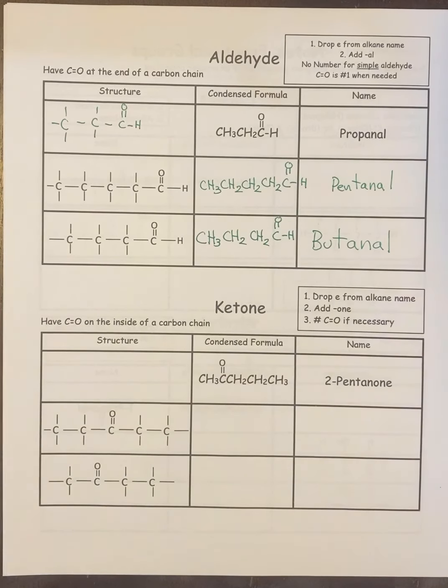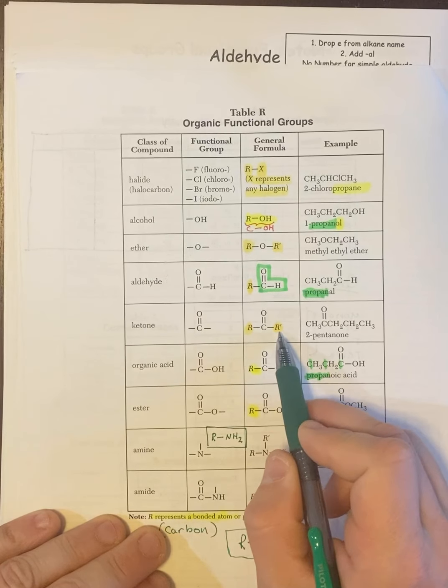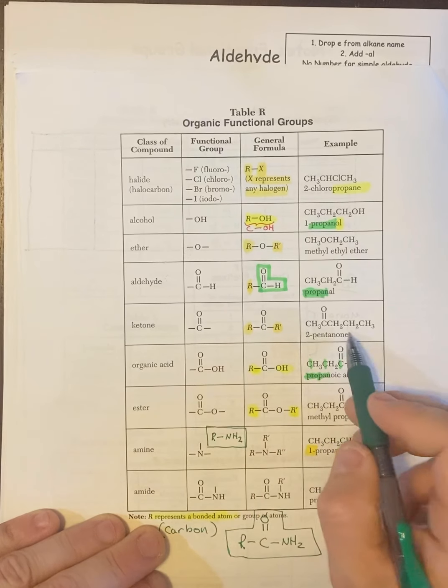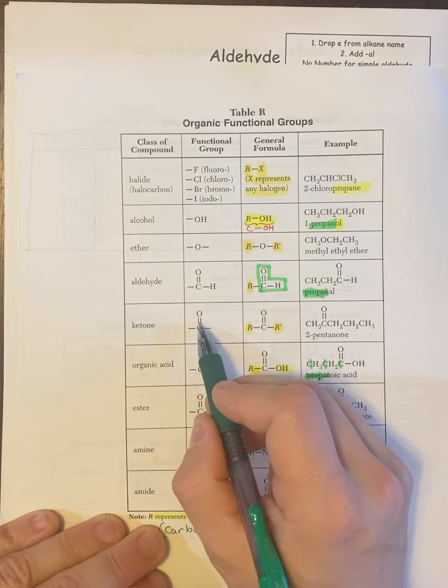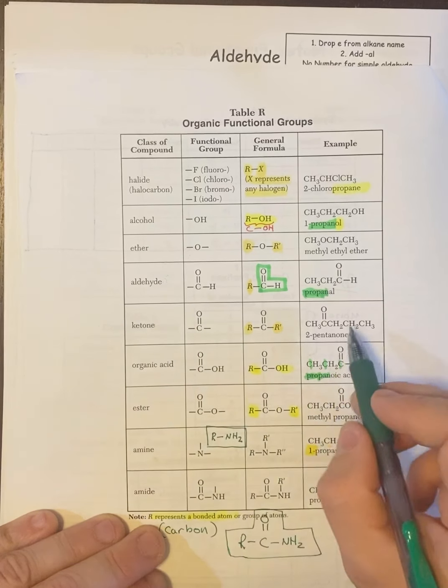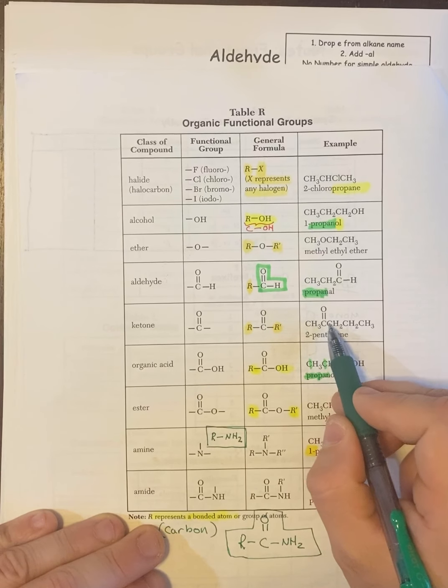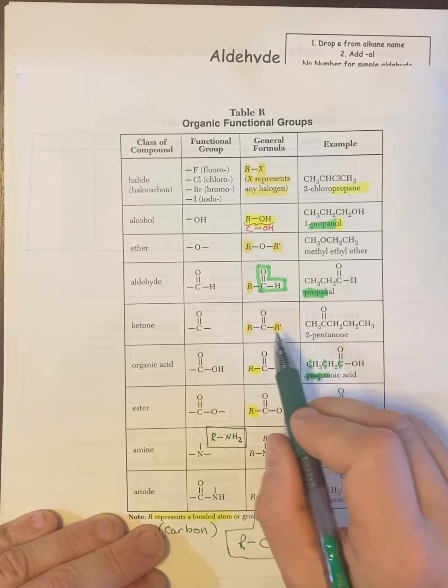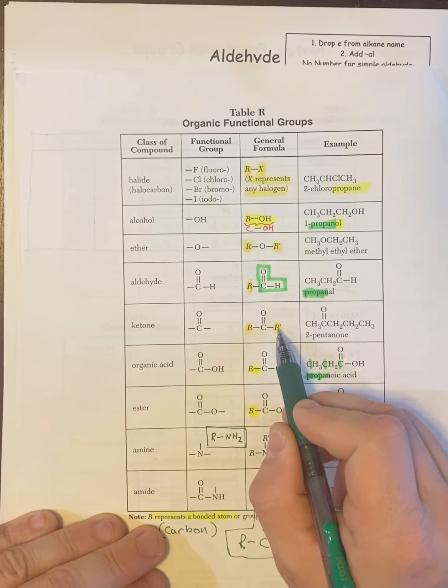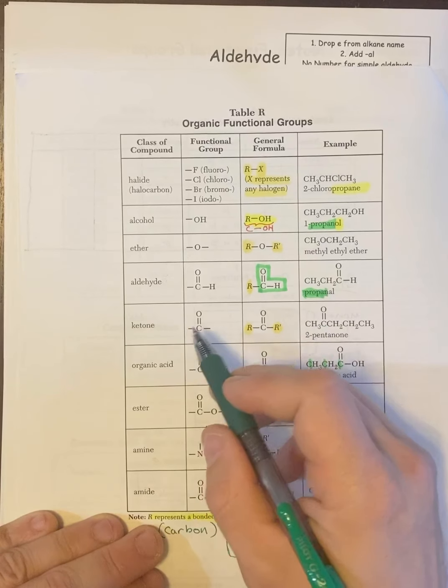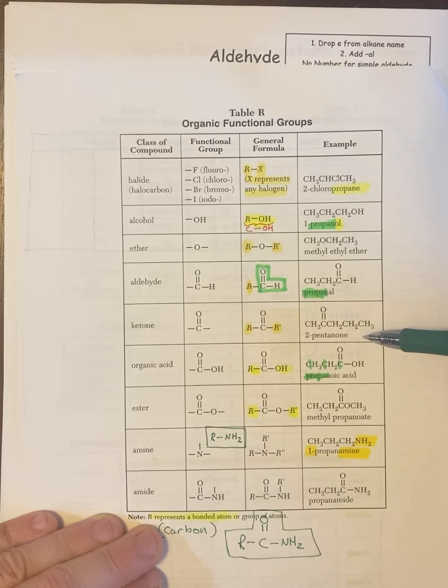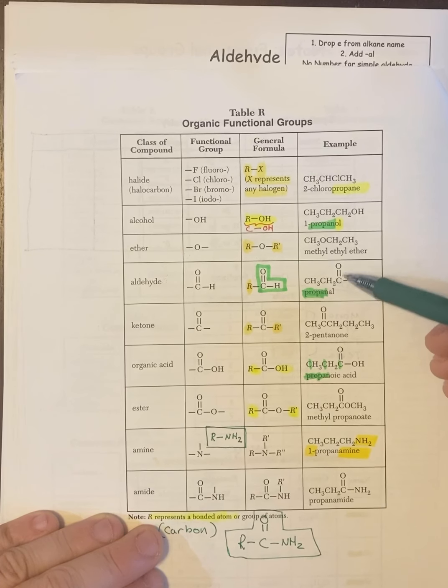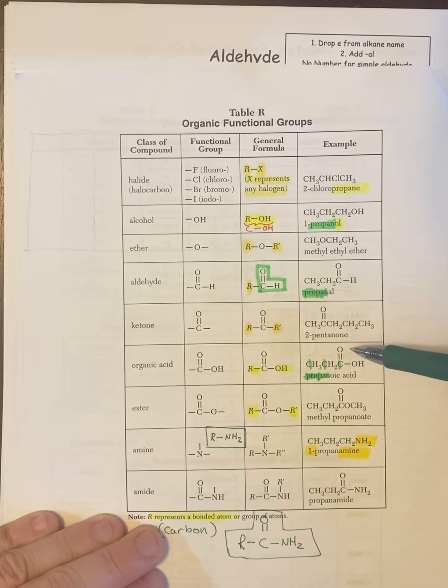Okay. Ketones. So if we look at ketones, they are in the middle of the chain. The way I can tell is because it's an R and an R. I can also tell from here, because they give me five in a row and the double bonded O, which is the functional group. But by saying R and R, what it's saying is it has to be in the middle. Because if it were on the end, it's an aldehyde. That's why we're doing these two together. The only difference between an aldehyde and a ketone is in an aldehyde, the double bonded O is at the end of a chain. And in a ketone, the double bonded O is anywhere in the middle of a chain.